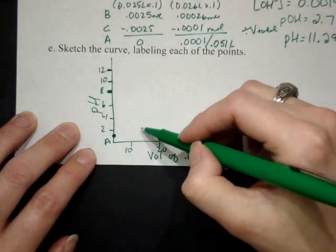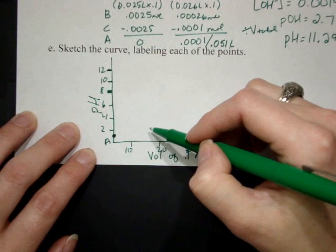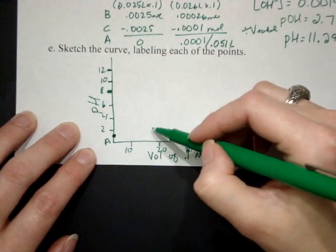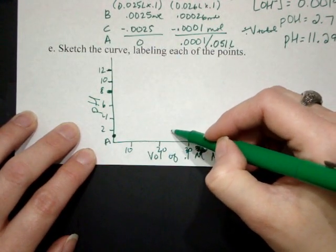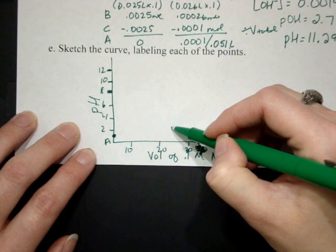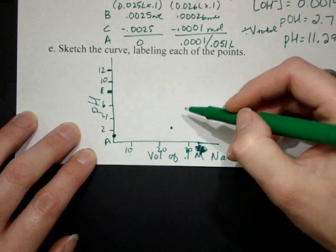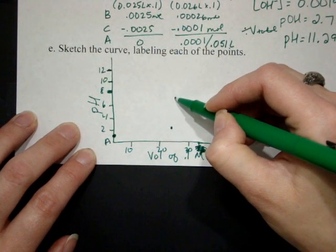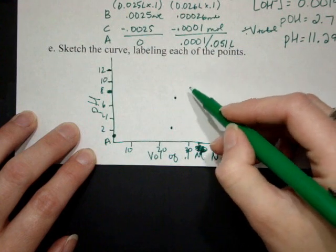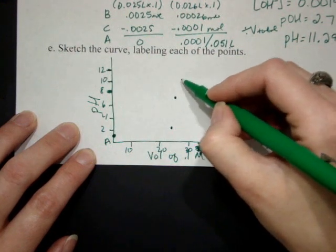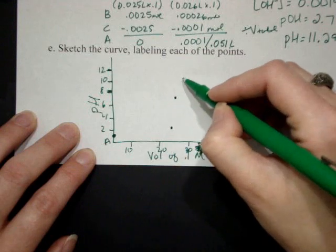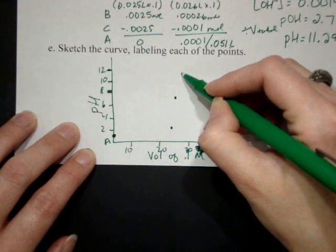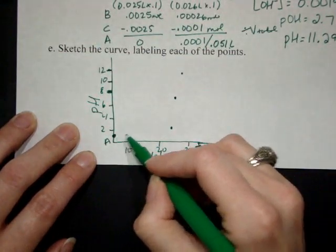At point B, we had 24 milliliters of 0.1 molar, and it had gone a whopping 2.7. So somewhere maybe in here. And then when we added one more milliliter, it went up to 7. And then when we added one more milliliter after that, it went up to 11.2. So somewhere maybe in here. And if we had continued on, it would have done the same thing.